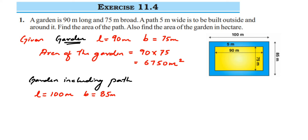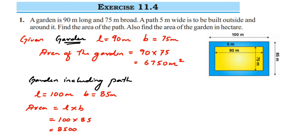Now I'm going to find out the area of the garden along with the path. This is length into breadth, equal to 100 multiplied by 85, which gives us 8500 meter square.